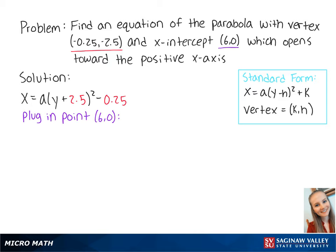Now we plug in the point (6, 0) and solve for a. This gets us 6 equals a times (0 plus 2.5) squared minus 0.25, which gives us a equals 1.